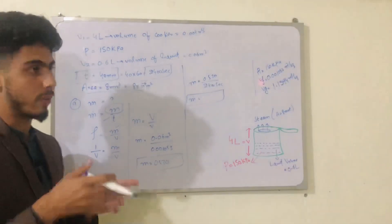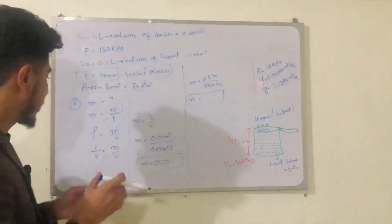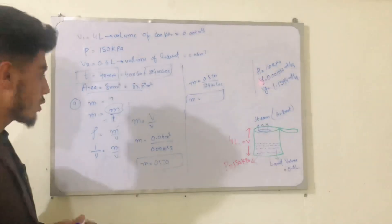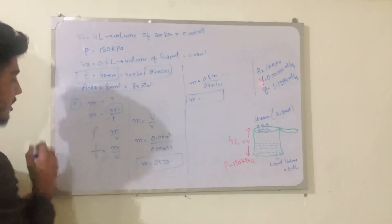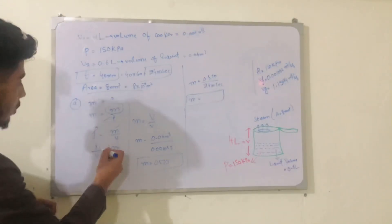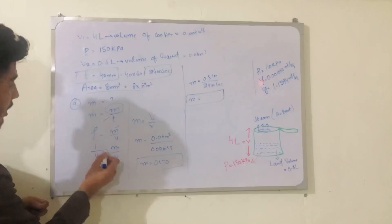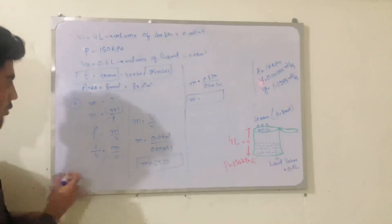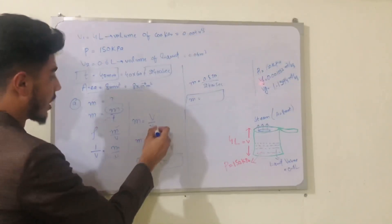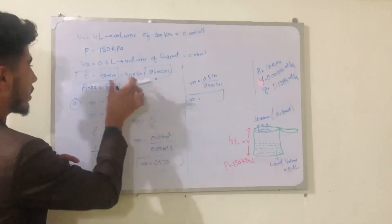Since the liquid form is not specified, we don't use a fixed density value. Instead, we use specific volume. Through cross-multiplication, mass equals volume divided by specific volume. Here we take the volume of the liquid, not the cooker volume.